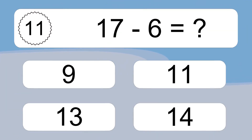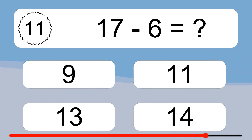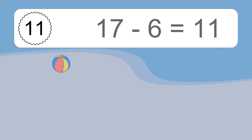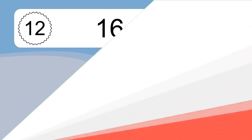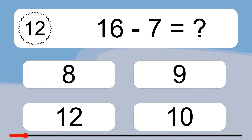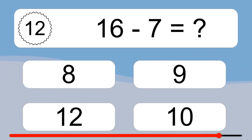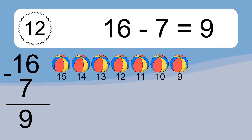17 minus 6 equals what? 17 minus 6 equals 11. Let's count it: 16, 15, 14, 13, 12, 11. 16 minus 7 equals 9. Let's count it: 15, 14, 13, 12, 11, 10, 9.